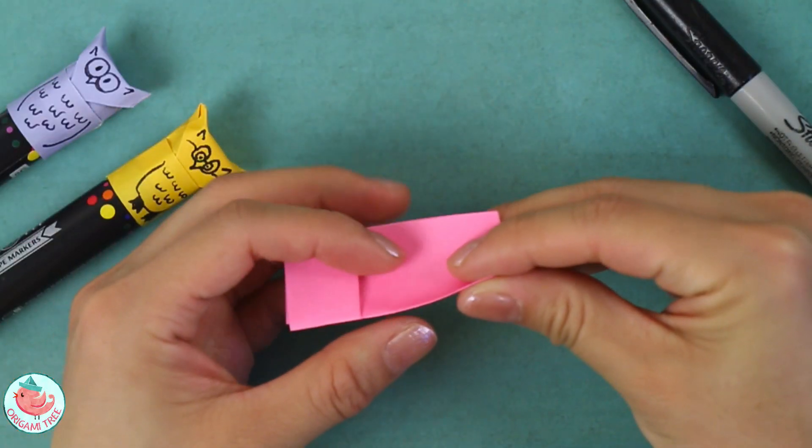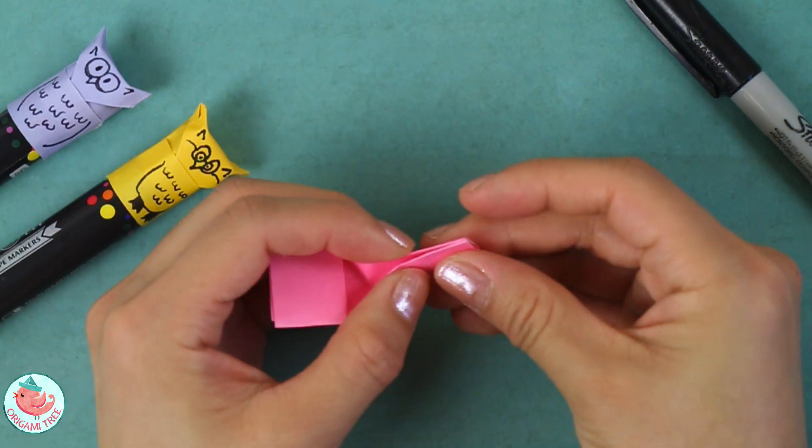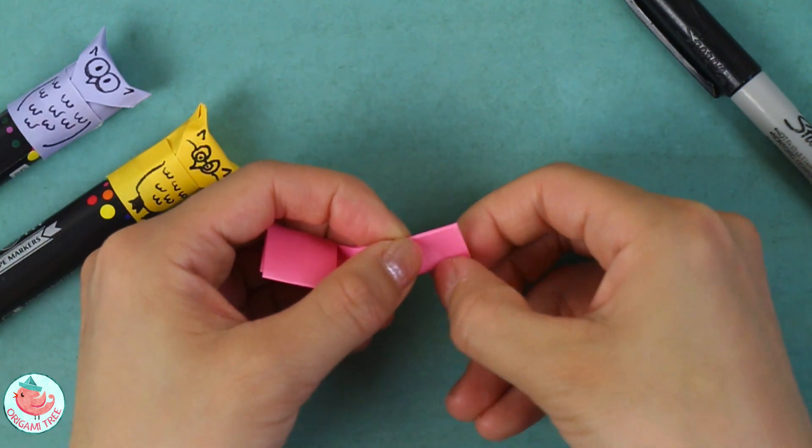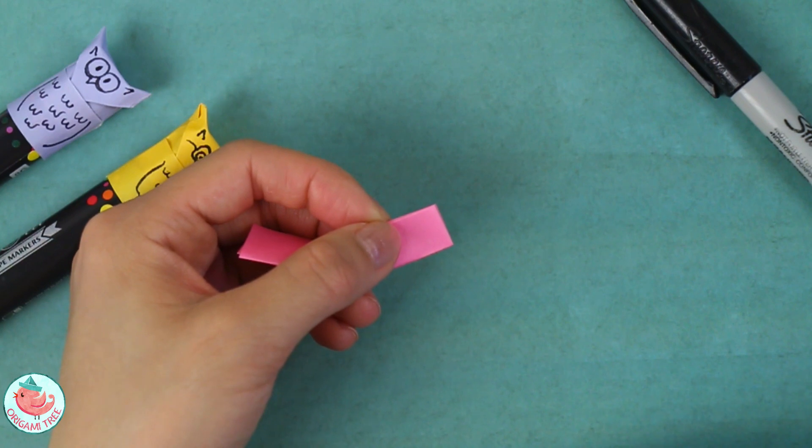After that you want to find the central point over here. Just fold upwards right about here and pinch. You don't want to crease all the way, just give it a little pinch at the side like that and unfold.